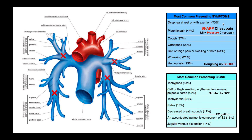We'll start with the symptoms of a PE. The most common symptom of a pulmonary embolism is dyspnea at rest or with exertion, experienced by 73% of patients with an active PE. This shortness of breath is not just seen with exertion — it's also seen at rest, and that's a big distinguishing point. If somebody gets short of breath only with exercise, it could mean COPD or that they're grossly deconditioned, but getting it at rest is a big red flag.